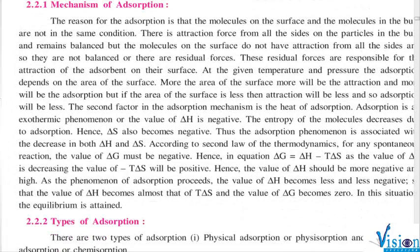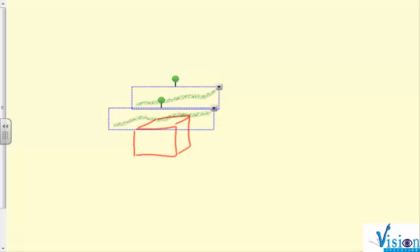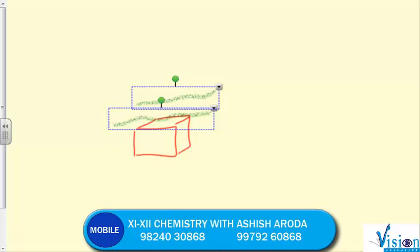Good morning everyone. Today we'll continue with our chapter, and our topic is the mechanism of adsorption. As I was explaining last time, when adsorption takes place on a solid surface, there are certain gas molecules present, and they get attracted towards the solid. We call this adsorption. But what is the mechanism involved behind this? Let us understand.